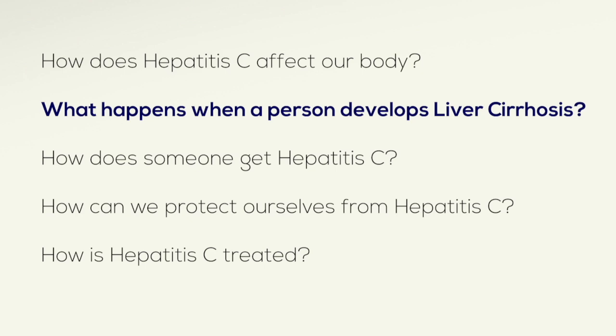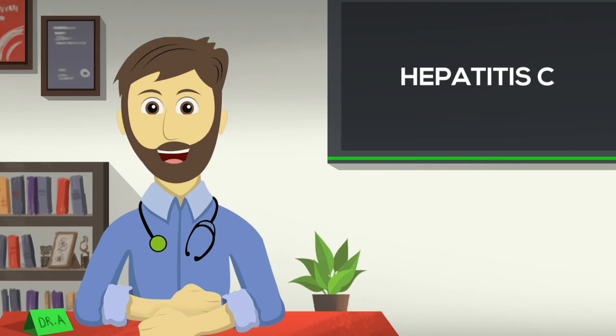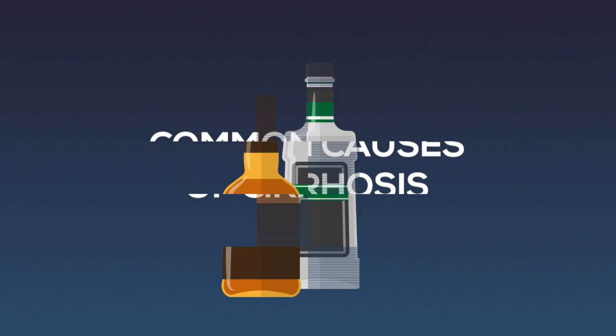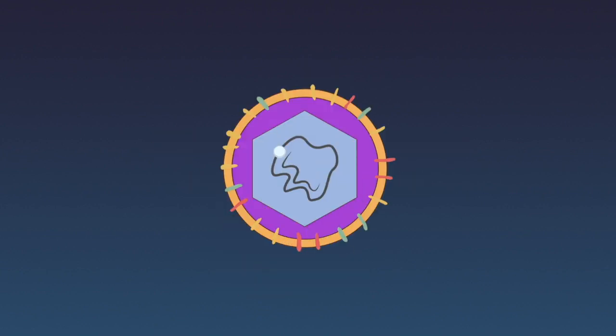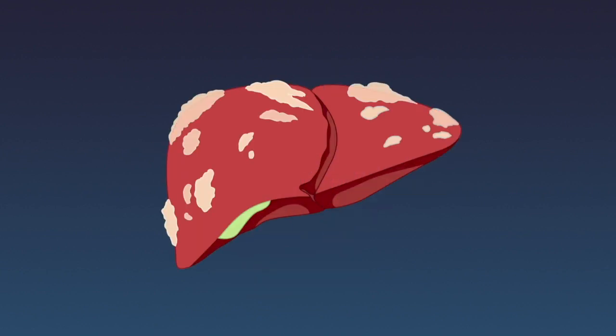What happens when a person develops liver cirrhosis? Liver cirrhosis can be caused by Hepatitis C or other diseases that slowly damage the liver over time. Other common causes of cirrhosis are alcohol use, Hepatitis B infection, and fatty liver disease.